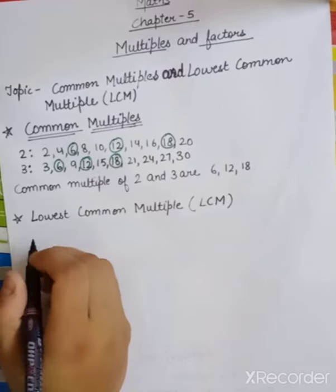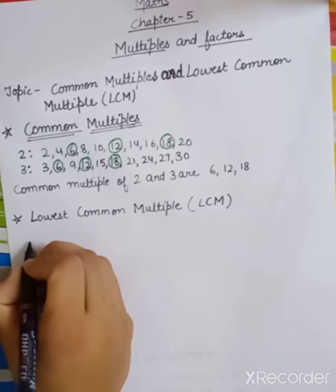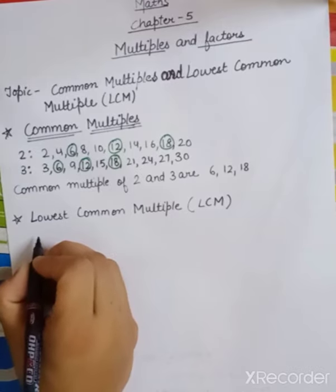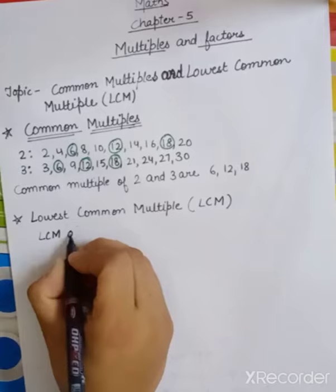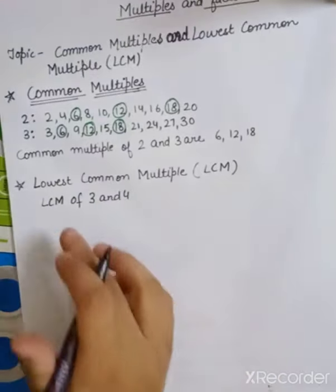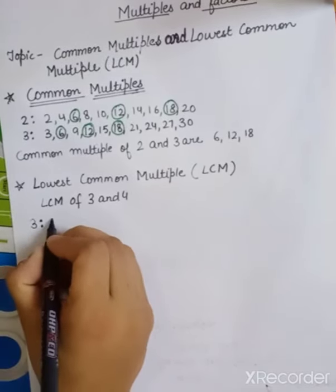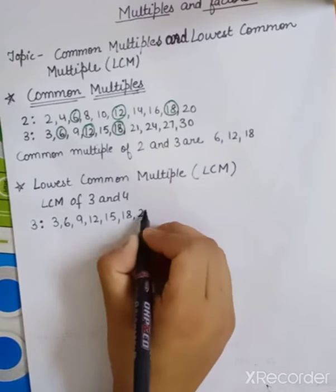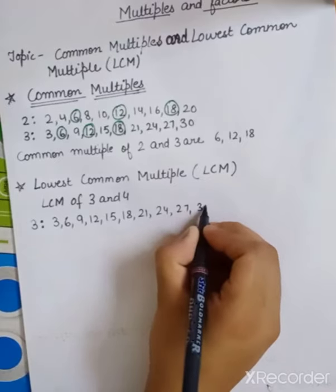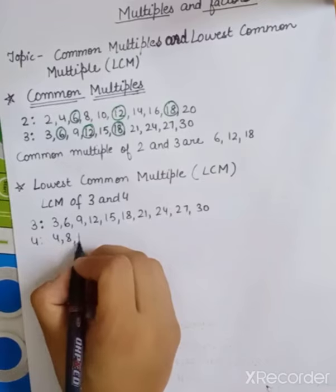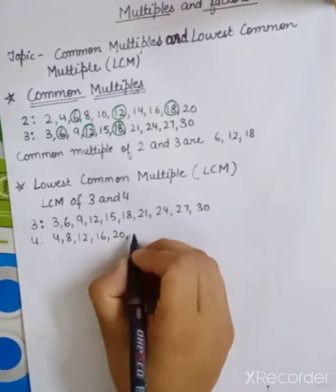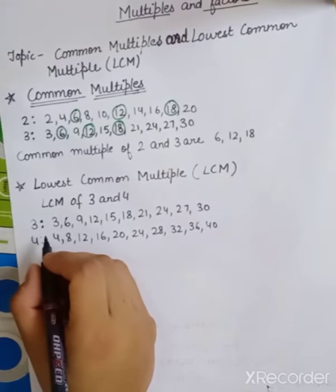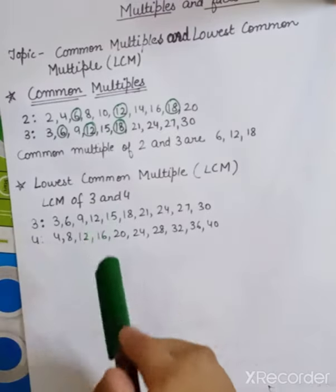Let us find the LCM of 3 and 4. First, we write the multiples of 3: 3, 6, 9, 12, 15, 18, 21, 24, 27, 30. Then the multiples of 4: 4, 8, 12, 16, 20, 24, 28, 32, 36, 40. Out of these two sets we have to find the common multiples of 3 and 4.